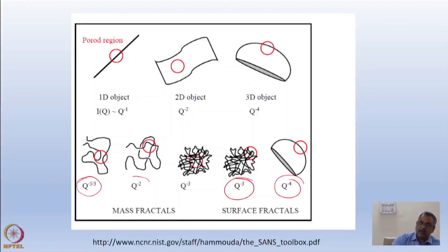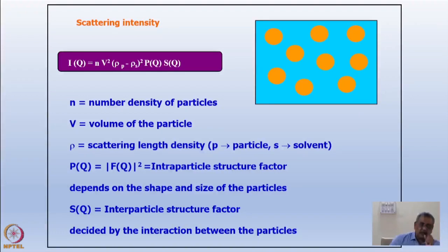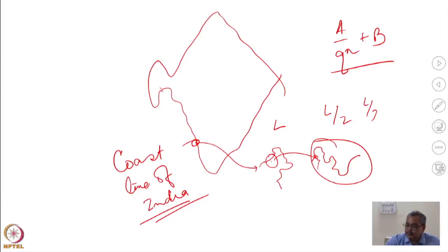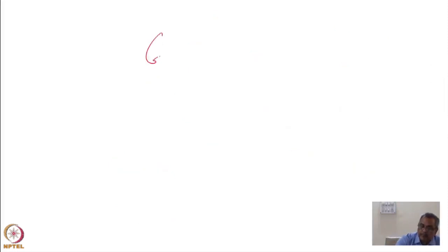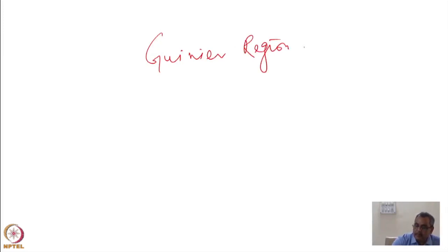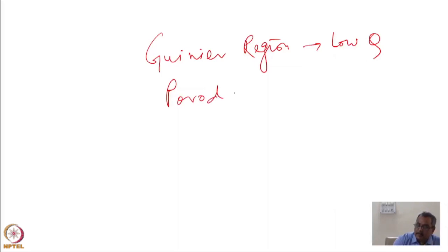So I have now introduced you to the Guinier region, which is the low-q region, and the Porod region, which gives me the surface-to-volume ratio at high q.